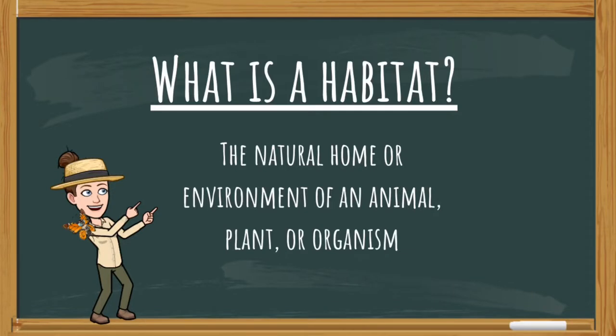Many of the threats to the western monarch population affect their habitat, so let's define what a habitat is. A habitat is defined as the natural home or environment of an animal, plant, or organism.